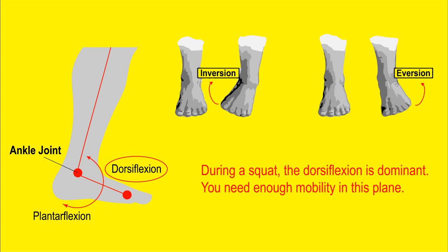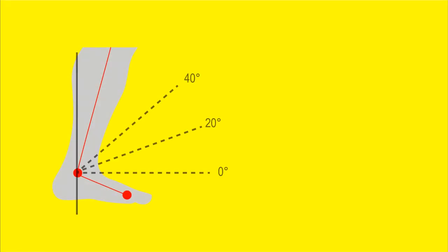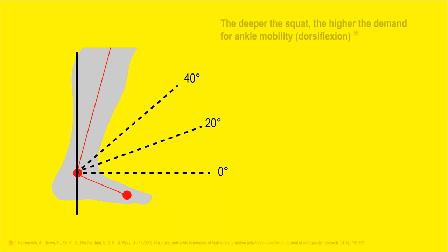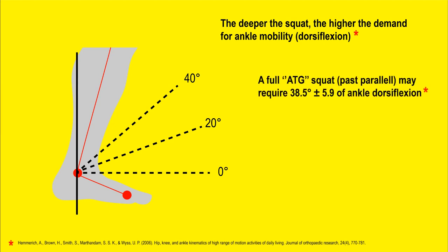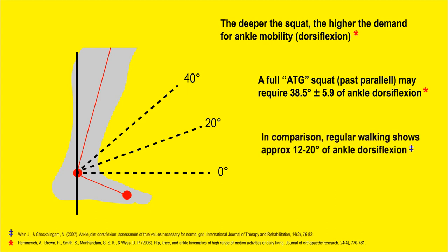To test dorsiflexion, take your foot and try to point your toes to the ceiling. You should be able to dorsiflex the ankles about 20 degrees — that is the normal limit, according to basic literature. To do a full ass-to-grass squat, you would sometimes need above 38.5 degrees of dorsiflexion, which is a little above the normal threshold. Generally, the deeper the squat, the higher the demand for ankle mobility, since the ankle is one of the most predominant structures that flex during the movement.